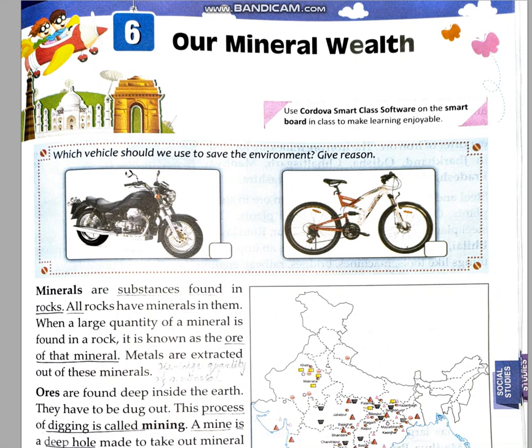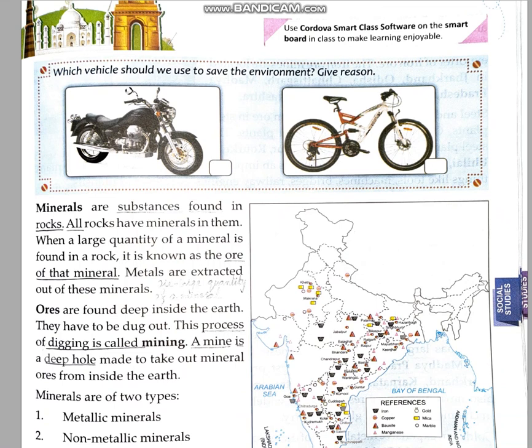Hello children, this is a video for your chapter 6 of SST, our mineral wealth. Here you can see two pictures — one is of a bike and one is of a cycle — with the question: which vehicle should we use to save the environment? Give reason. All my children can answer this very well: if I choose cycle, it's because there is no pollution. So now let's move on to the chapter.